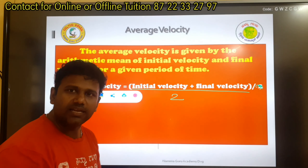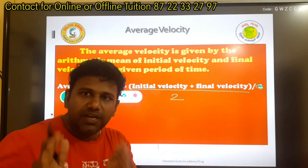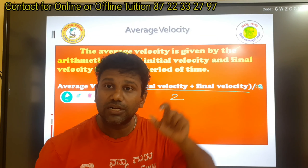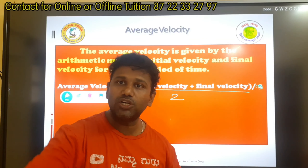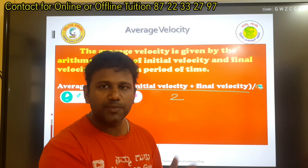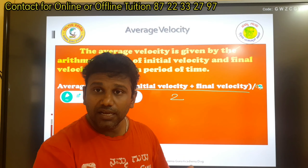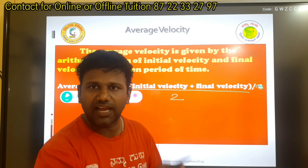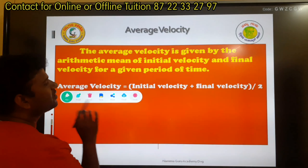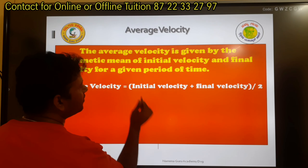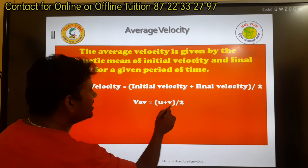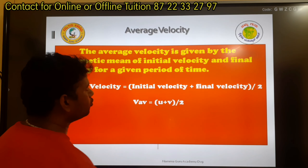The formula for average speed is total distance covered by total time taken, so the formula is completely different. The formula for average velocity is initial velocity plus final velocity divided by 2, that is u plus v divided by 2.